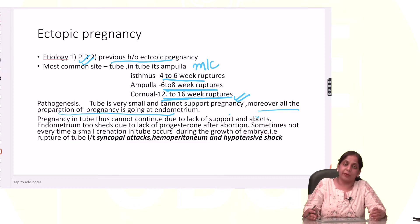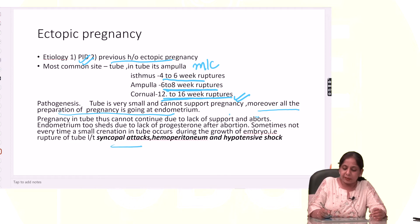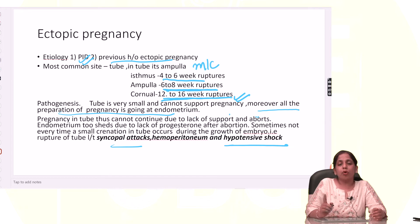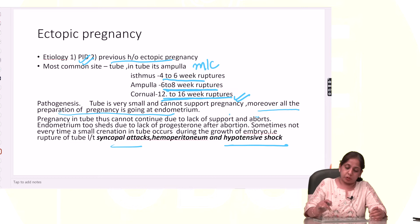If the pregnancy ruptures, there is a lot of bleeding in the tube — there is hemorrhage into the tube. This is why the patient has a syncopal attack and hypotensive shock. Syncopal attacks and hypotensive shocks occur only in ruptured tubal pregnancy, not in unruptured.